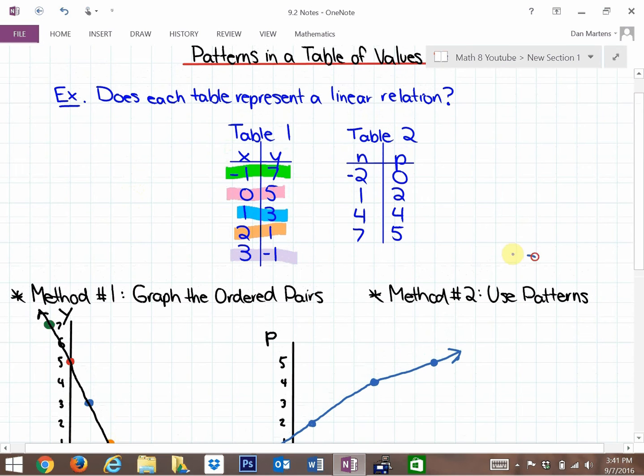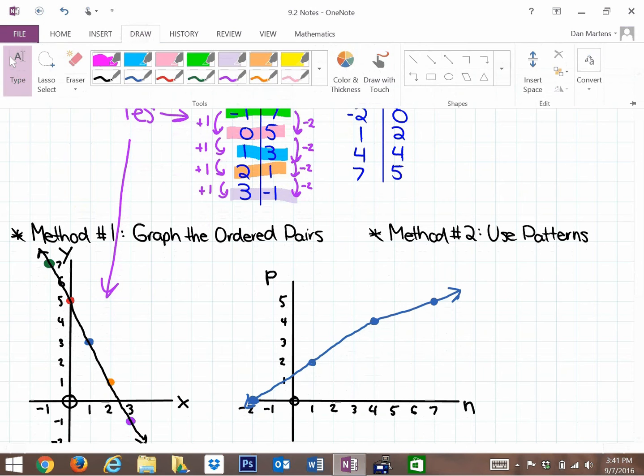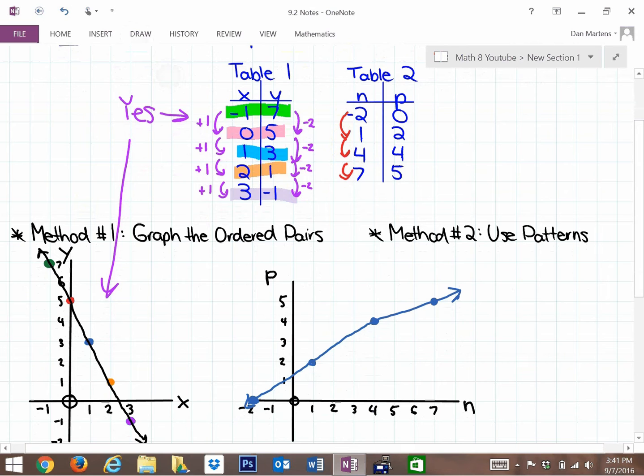A second way that we can do it is by using patterns. The pattern on the x variable to go from one number to the next is always going up by 1. And in the y column, each number goes down by 2. So this would be a yes. Whether you're using patterns or whether you're graphing, it is absolutely a linear relationship. Whereas if you look at the second table, there is a pattern in the n column going up by 3. But for the p column, and this is why it was a curved line at the end, it goes up by 2, up by 2, but then up by 1. So that's going to be no whether you use patterns or a graph.